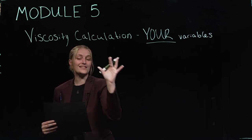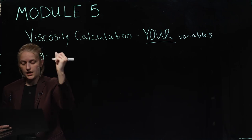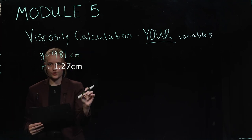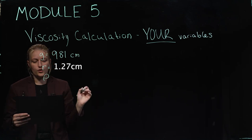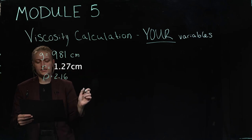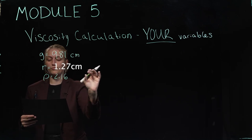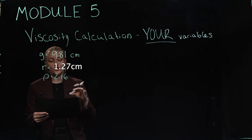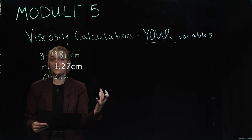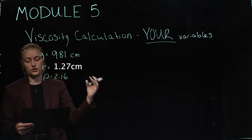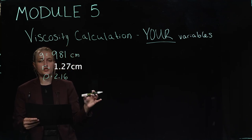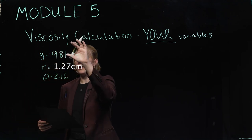For your actual calculations, gravity g is 981 centimeters per second squared, the same as in the example. You'll get the radius by measuring the diameter of the marble and dividing by two. The density of the marble is 2.16 grams per centimeter cubed — obtained by measuring water displacement for volume and weighing the marble, then using density equals mass divided by volume. The only variables that change between trials are velocity and the resulting viscosity calculation.